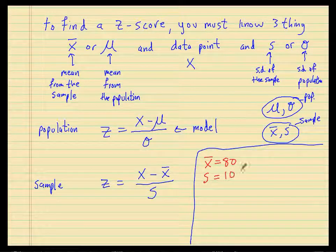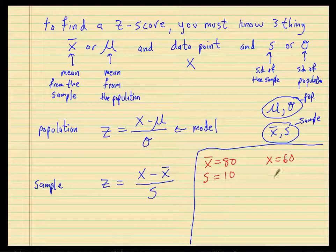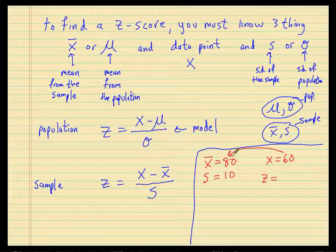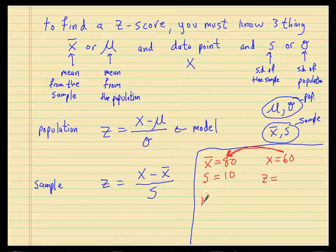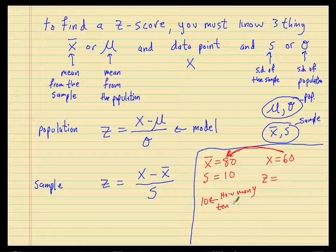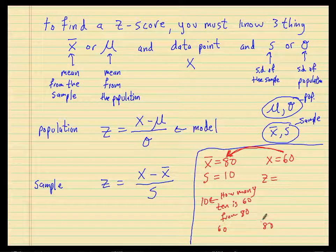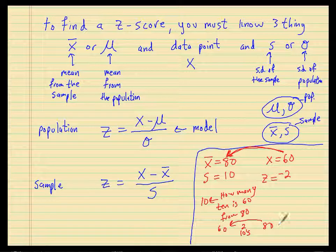Let me do one more. Let's say this is a test and you scored a 60. What is your z-score? Pause it and try to figure it out. Your z-score would be: how many standard deviations is 60 from 80? The standard deviation is 10, so they're asking how many tens is 60 from 80. On a number line, we are two tens away, so the z-score would be negative 2, because 60 is less than 80.